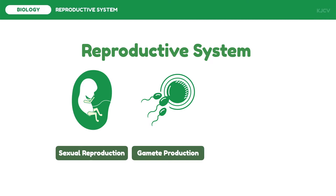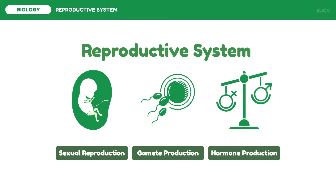Aside from this, the reproductive system shares functions with the endocrine system by producing hormones that are essential for the development of certain characteristics and sexual functions, like maintenance of pregnancy and gamete production. With these functions, the reproductive system is the only organ system which differs in males and females.